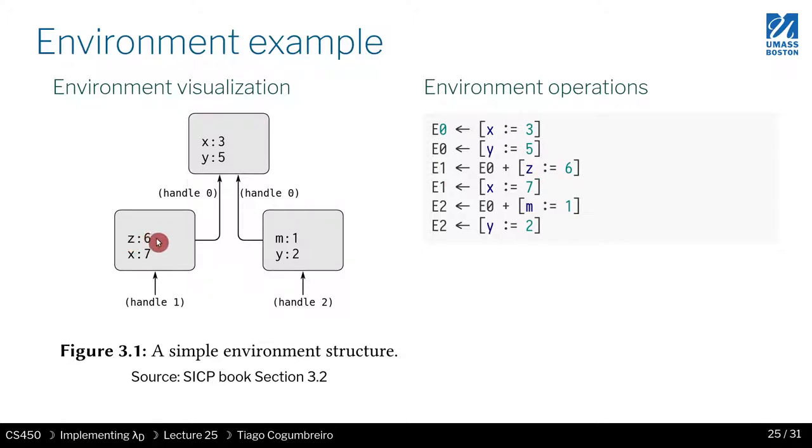Then we add X to 7, and with the push operation where you initialize with M assigned to 1, you get a box with a single binder M assigned to 1.